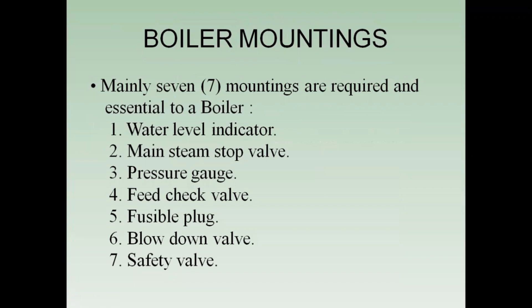Boiler mountings are the main parts of boilers which are mounted on the shell. There are mainly seven boiler mountings. Firstly, the water level indicator — it indicates the level of water in the boiler. Then comes the main steam stop valve, which controls the flow of steam from the boiler to the steam pipe. Then comes the pressure gauge, which is used to measure the boiler pressure. Then comes the feed valve, which regulates the feed water supply to the boiler. Then comes the fusible plug — it works as a fire extinguisher and prevents explosion due to overheating of the furnace plate.